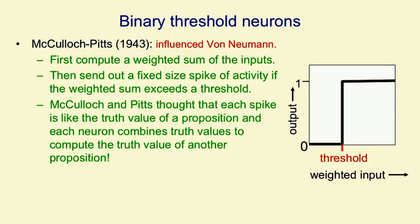For a binary threshold neuron, you can think of its input-output function as if the weighted input is above the threshold, it gives an output of 1, otherwise it gives an output of 0.